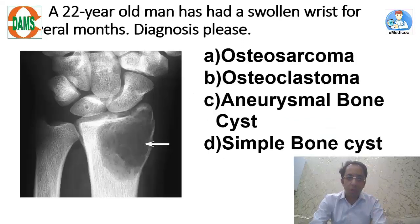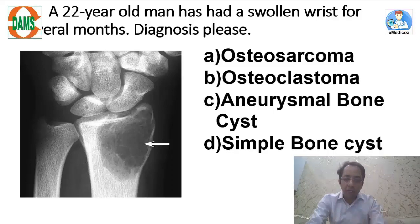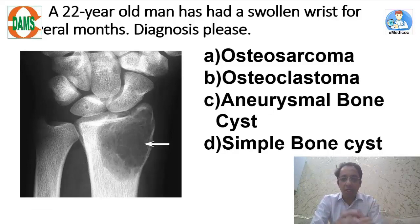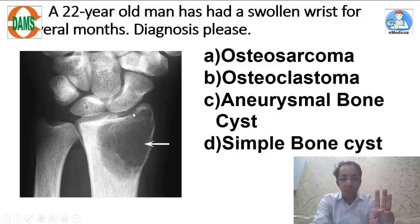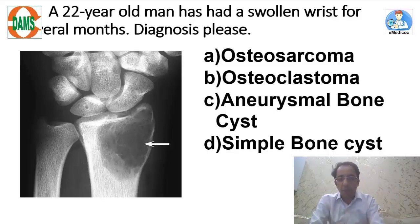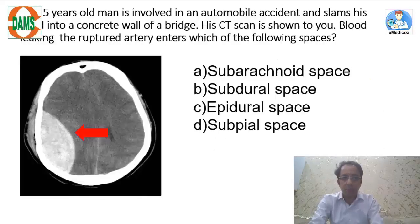Next is a clinical vignette with an X-ray: a 22-year-old man with a swollen wrist showing a lytic lesion. The growth plates have fused, so this is an adult. Aneurysmal bone cyst is seen in the metaphysis of a child, so this is not an aneurysmal bone cyst. This is an epiphyseal lesion in an adult, eccentrically placed, sub-articular, extending to the joint — an expansile lesion with soap bubble appearance. This is osteoclastoma (giant cell tumor). Simple bone cyst is a centrally located metaphyseal lesion in a child. Answer: osteoclastoma.